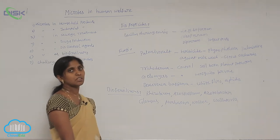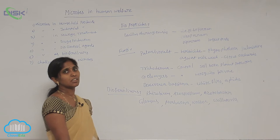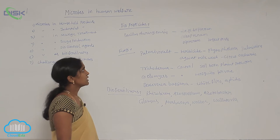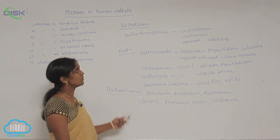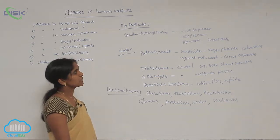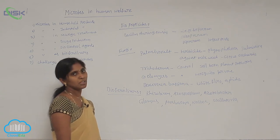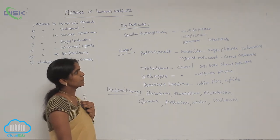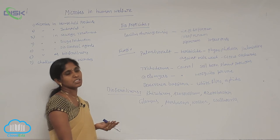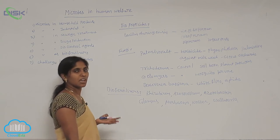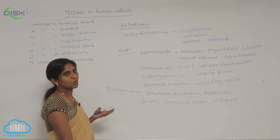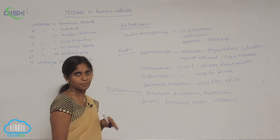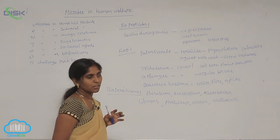Pest-resistant varieties are developed using the bacterium Bacillus thuringiensis. Bacillus thuringiensis works against pests like Lepidoptera, Coleoptera, and Diptera insects. It releases endotoxins, which have insecticidal properties. When these endotoxins are ingested by insects, the insects die.